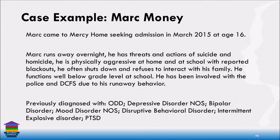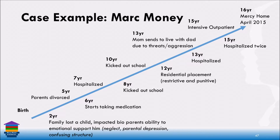As you can see, the information we got was pretty much 'what's wrong with Mark.' What we wanted to do was look at what's happened to Mark, not what's wrong with Mark. We looked at a timeline of his life. Mark was born in 1999. At two years old, his family lost a child — this impacted his biological parents' ability to emotionally support him. He experienced neglect, parental depression, and confusing structure. His parents divorced at five years old. In that age range from two to five years old, as we know, attachment is very important, and from what we've learned from Mark's example, he wasn't getting a lot of those needs met at that time.